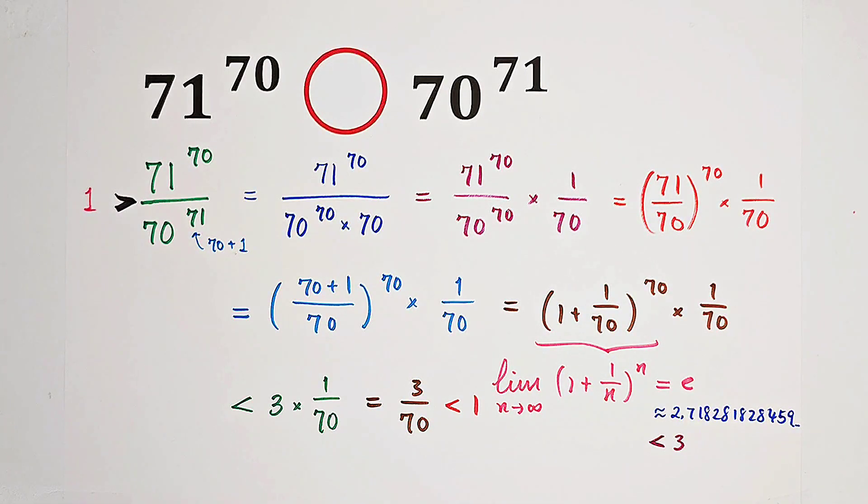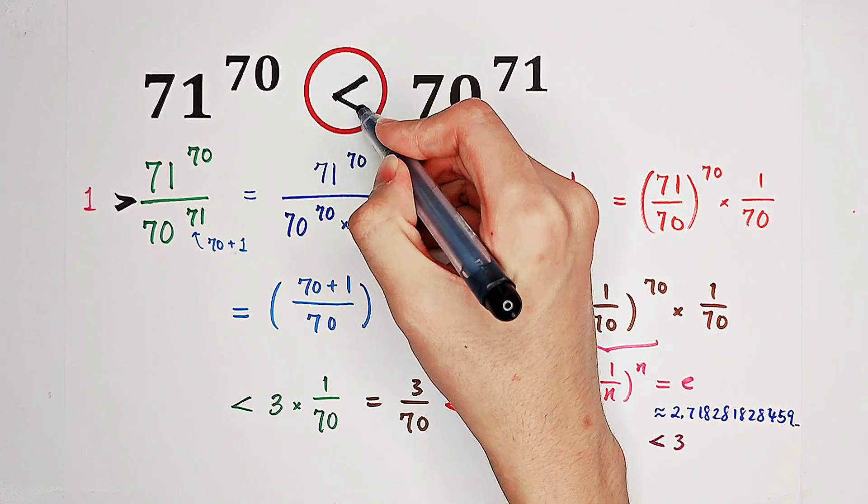If it is less than 1, then who is greater? Of course, the right-hand side is greater.